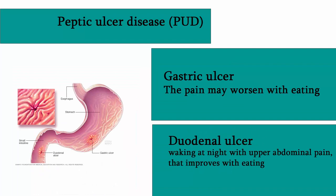The most common symptoms of duodenal ulcer are waking at night with upper abdominal pain that improves with eating. With gastric ulcer, the pain may worsen with eating. The pain is often described as a burning or dull ache. Other symptoms include belching, vomiting, weight loss, or poor appetite.